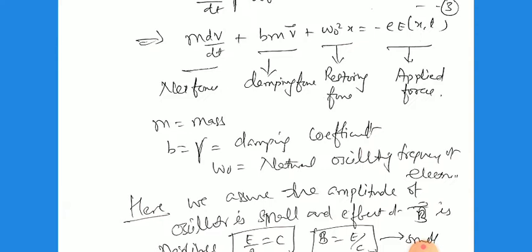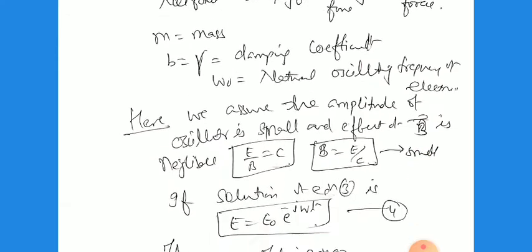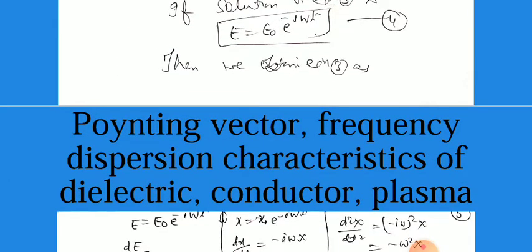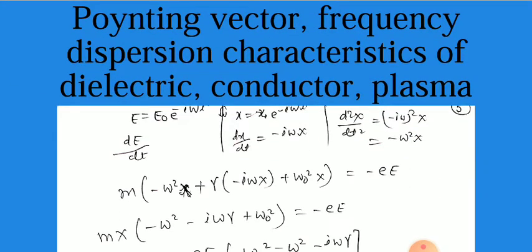Here we assume that the amplitude of the oscillator is small and the effect of B (the magnetic field) is negligible, because B = E/c and since c is very large, B is small. For the solution, we assume as in earlier classes: x = x₀ e^(−iωt), and E = E₀ e^(−iωt). Then dx/dt = −iωx, and d²x/dt² = −ω²x. Substituting into the equation of motion gives m(−ω²x + γ(−iω)x + ω₀²x) = −eE. Factoring out mx, we get (−ω² − iωγ + ω₀²) = −eE/mx.